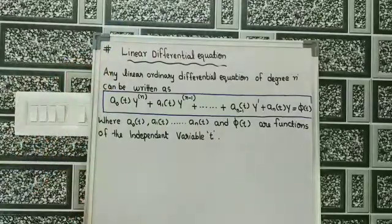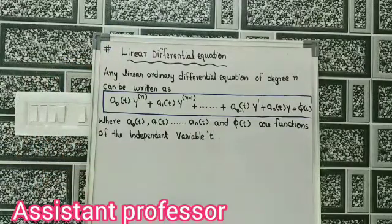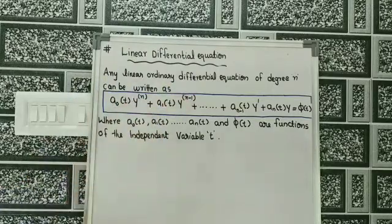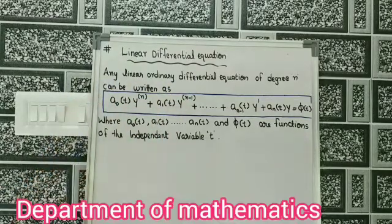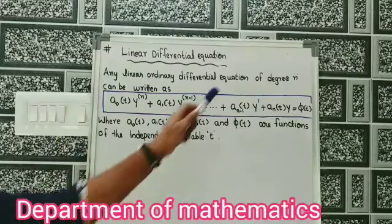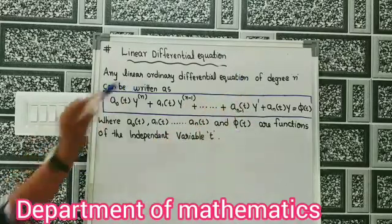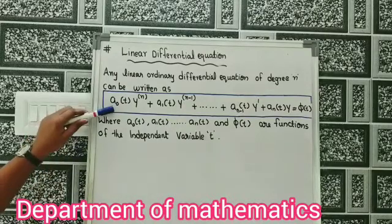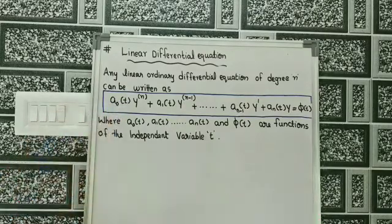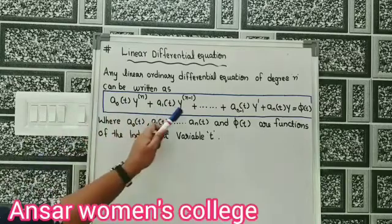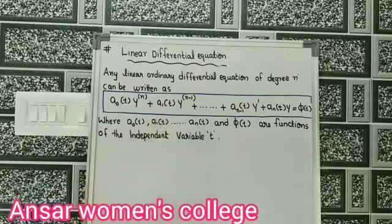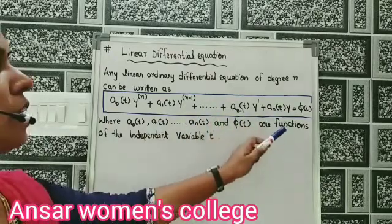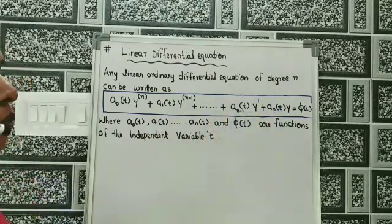What is meant by a linear differential equation? Any linear ordinary differential equation of degree n can be written in the general form: a naught of t times y-n, plus a₁ of t times y-(n-1), plus ... plus a-(n-1) of t times y-dash, plus aₙ of t times y, equals phi of t.